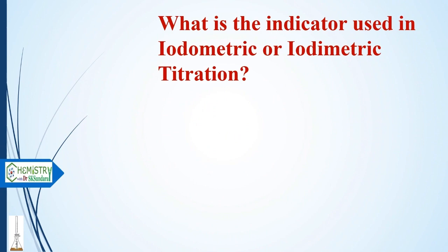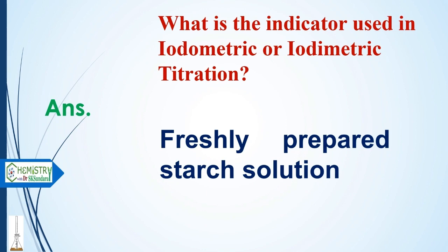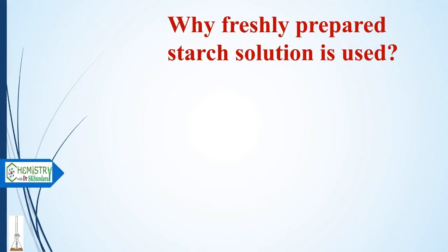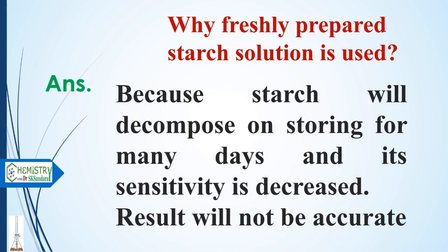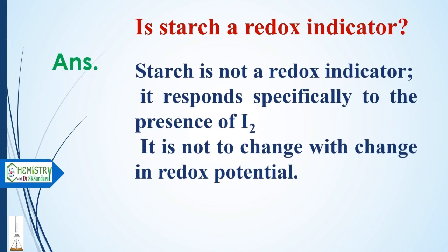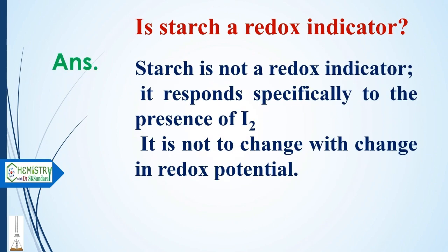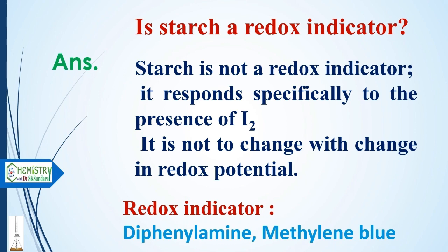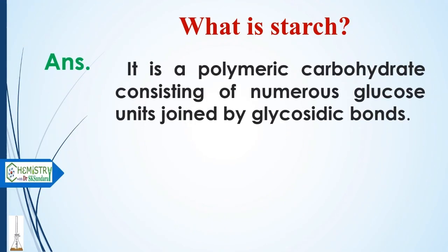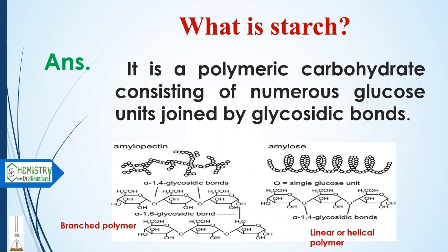What is the indicator used in iodimetric or iodometric titrations? The answer is freshly prepared starch solution. Why freshly prepared? Because starch decomposes on storing for many days and its sensitivity decreases, making results inaccurate. Is starch a redox indicator? No, starch is not a redox indicator — it responds specifically to the presence of I₂, not to a change in redox potential, unlike diphenylamine or methylene blue. Starch is a polysaccharide consisting of numerous glucose units joined by glycosidic bonds, and it exists as two types: the linear or helical polymer amylose, and the branched polymer amylopectin.